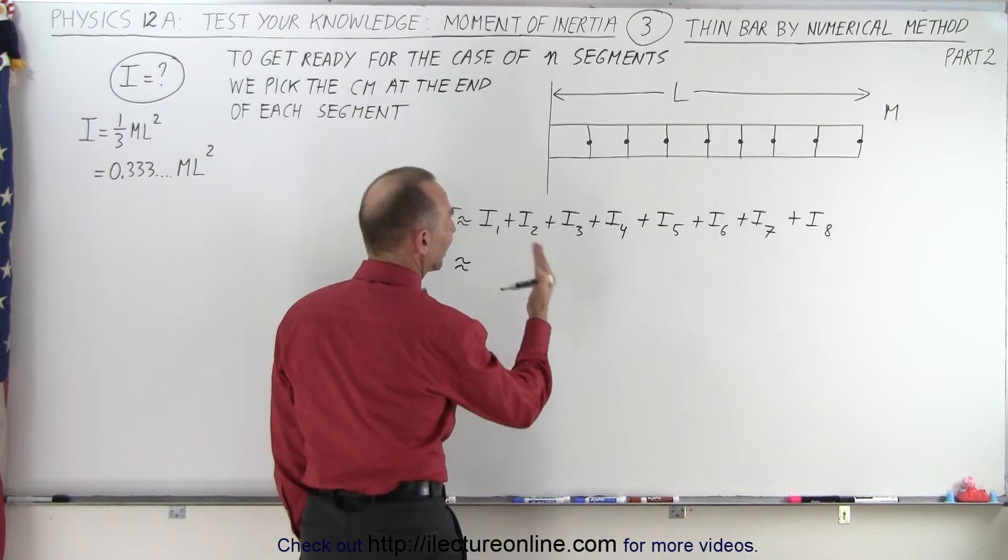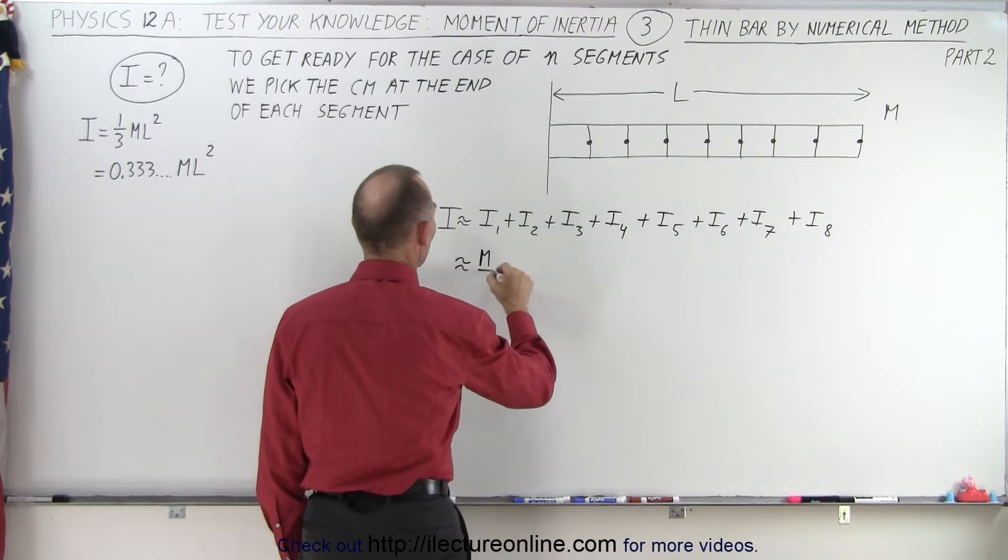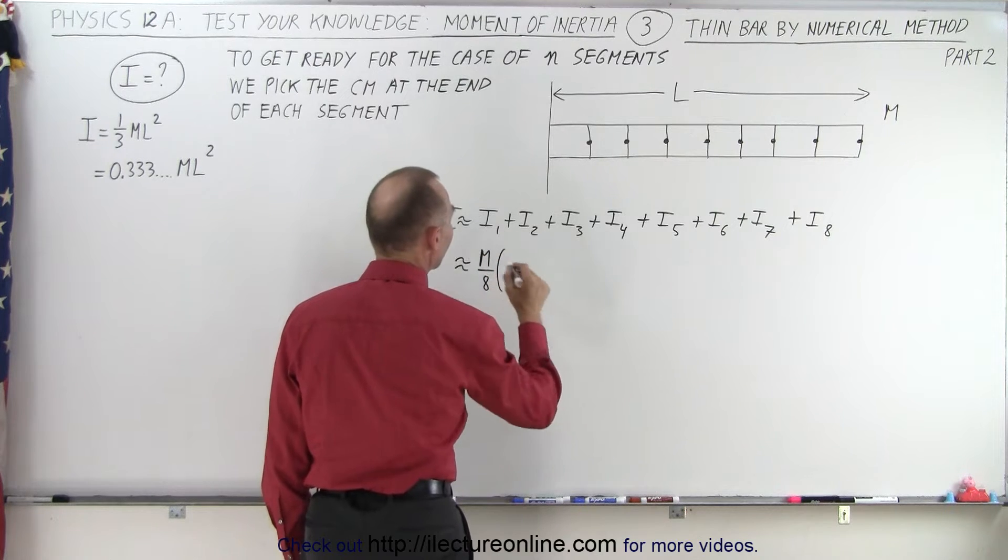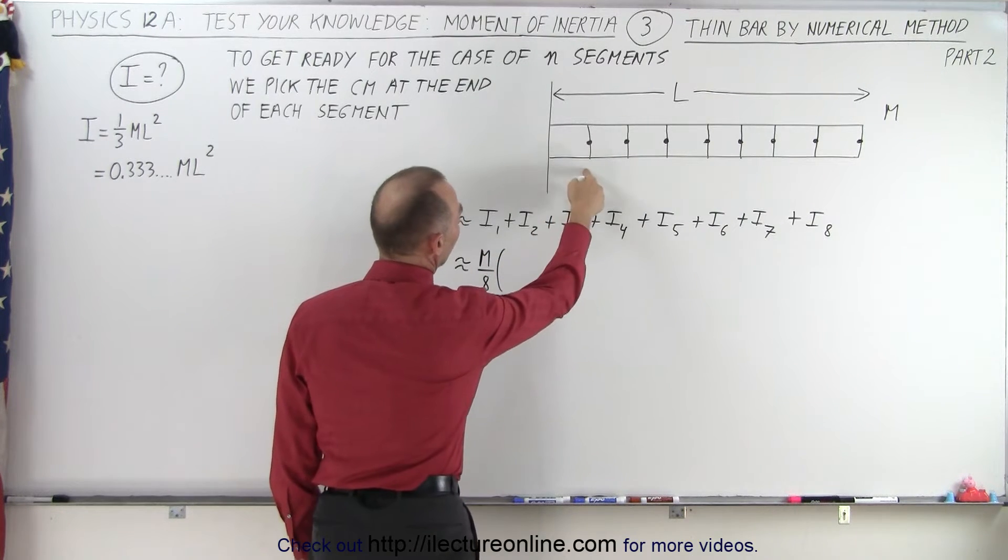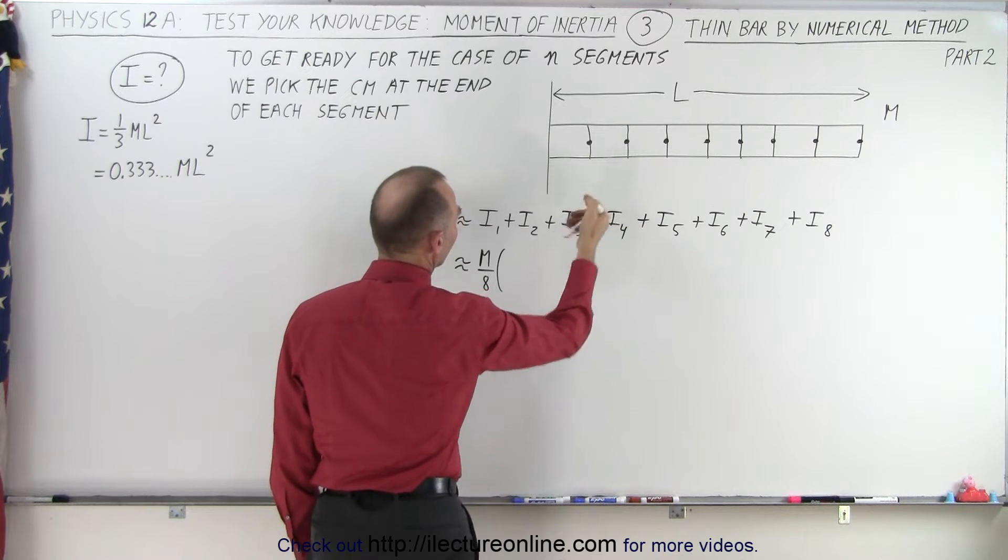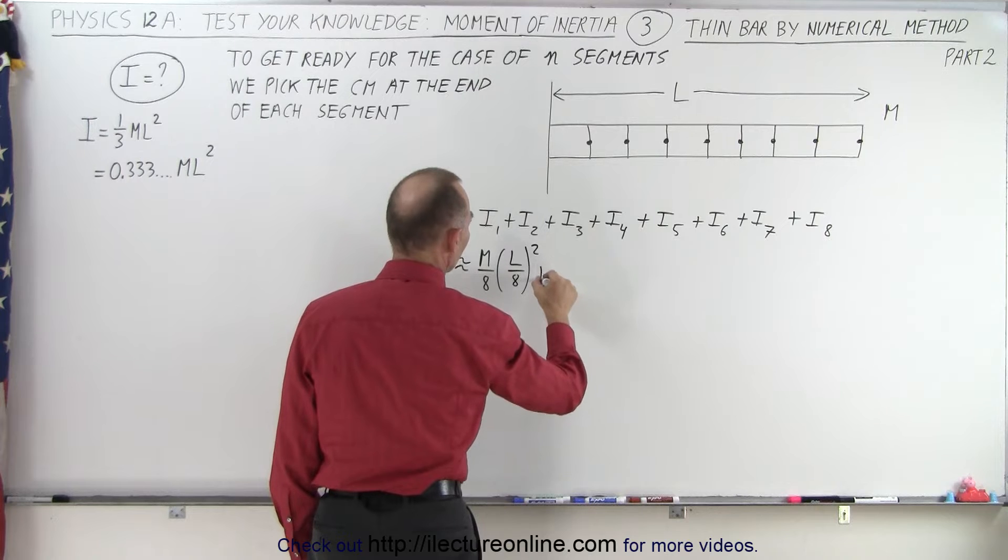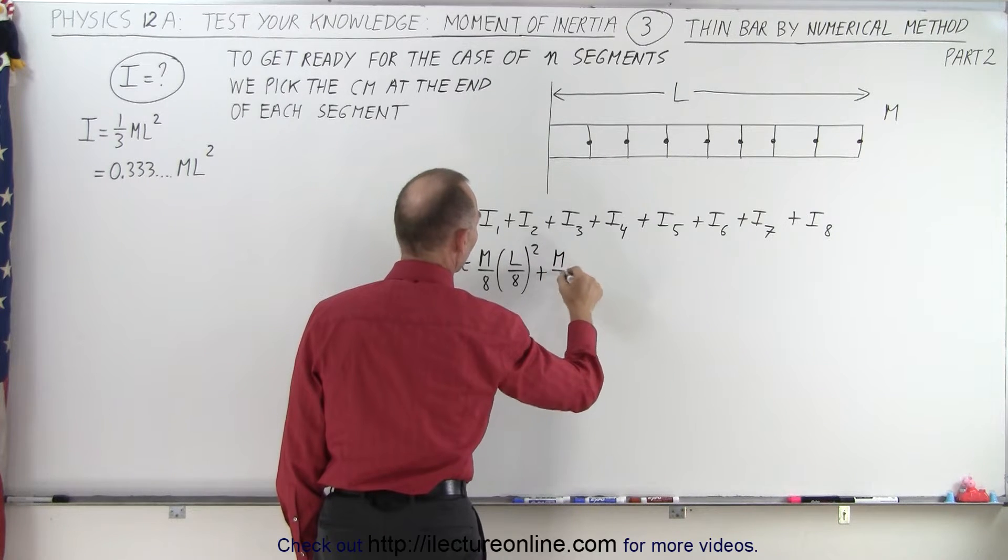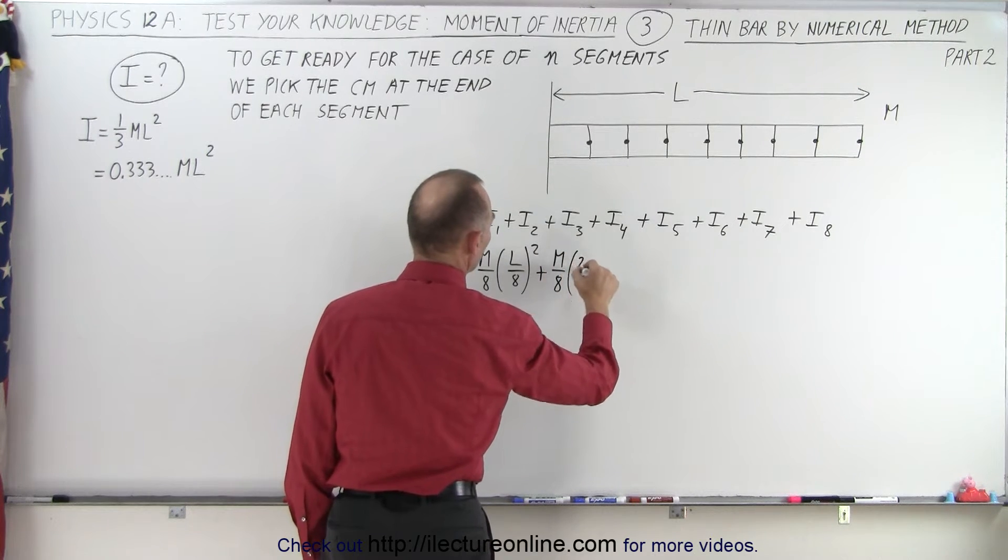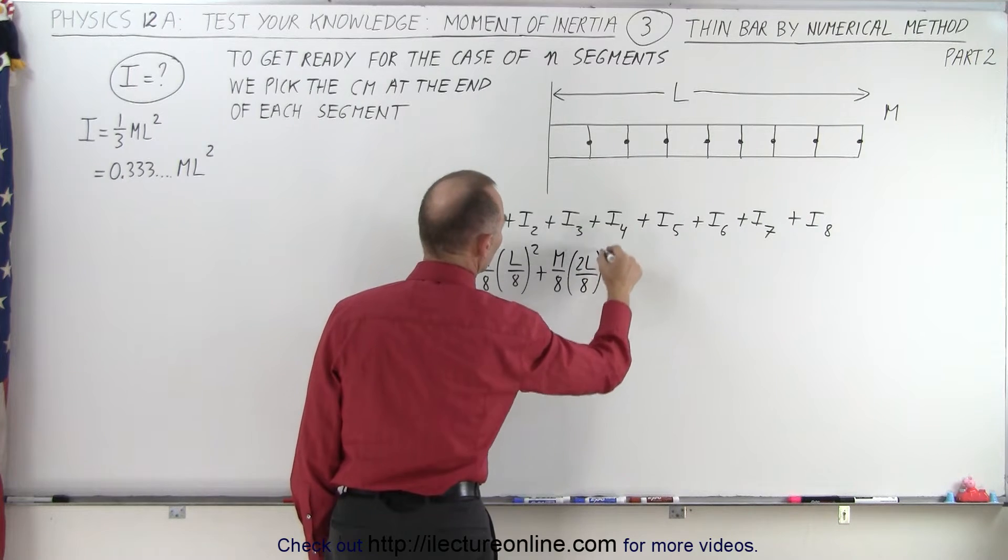Now we're going to have each segment having 1/8th the mass, m over 8, multiplied times the distance to that, that is 1/8th of the l, so that would be l over 8, and we have to square that. And that would be for the first segment plus m over 8 times 2l over 8 quantity squared.